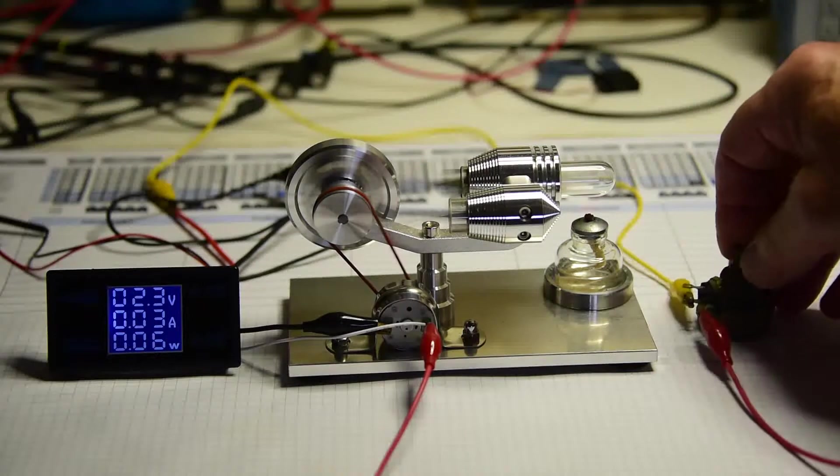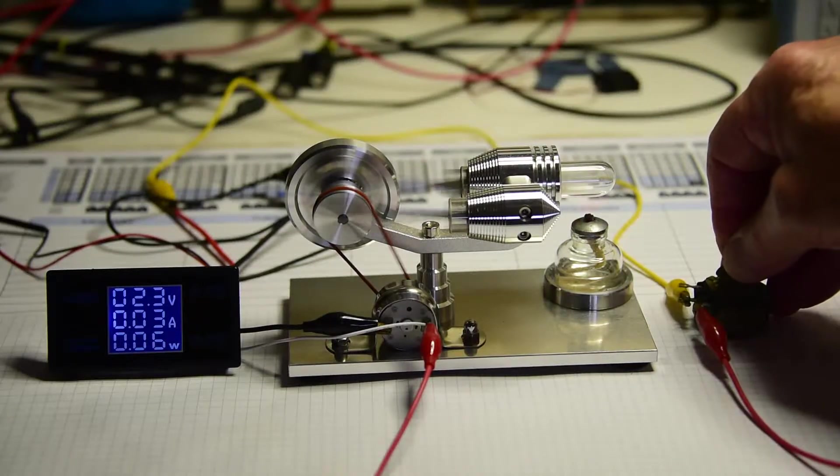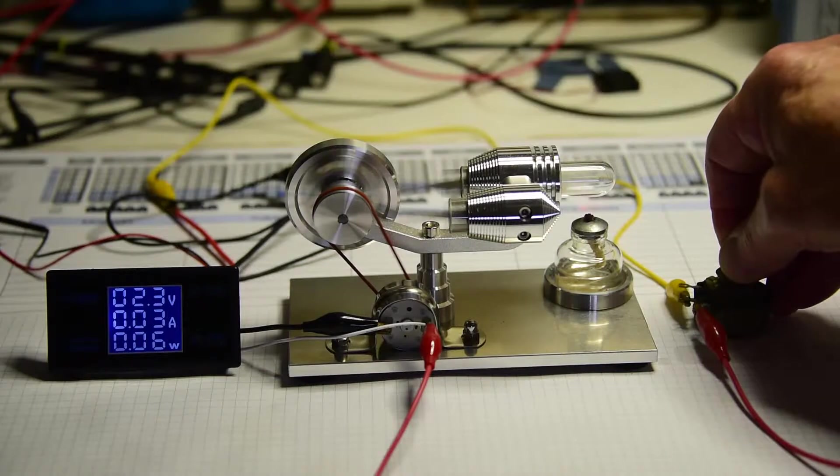The more load we put on the generator, the slower the Stirling engine goes because it's not a very powerful engine.